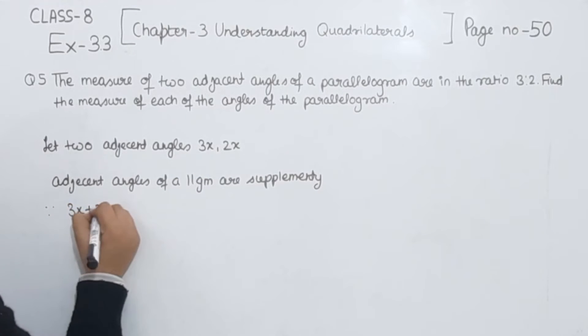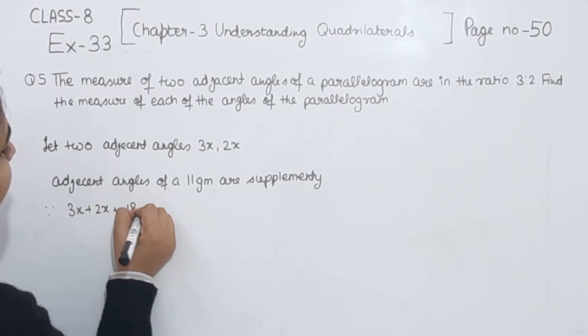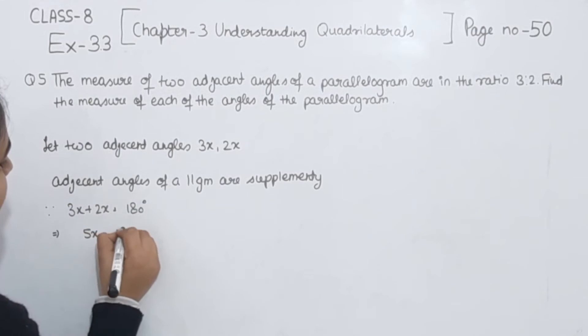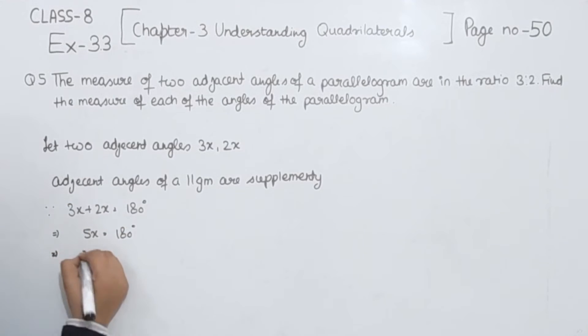So, 3x plus 2x is equal to 180 degrees. Now 3 plus 2 will have 5x is equal to 180 degrees and x is equal to 180 degrees divided by 5.